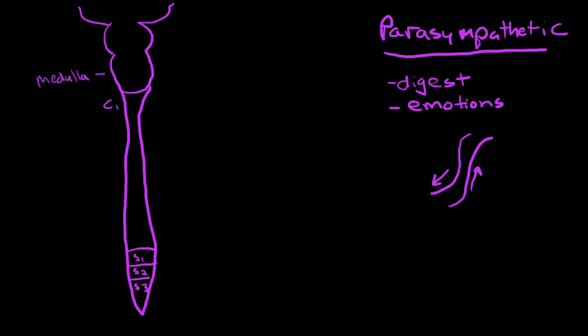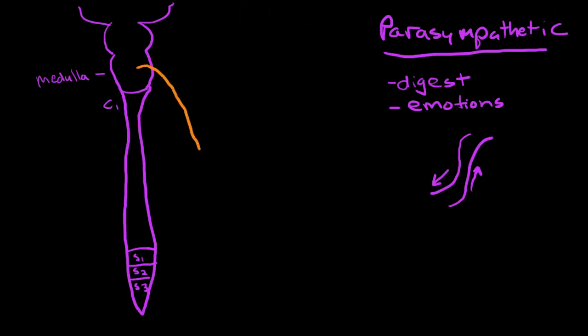When we think of the parasympathetic nervous system, we think about the vagus nerve, which is cranial nerve number 10. It branches off near the brainstem, the medulla.